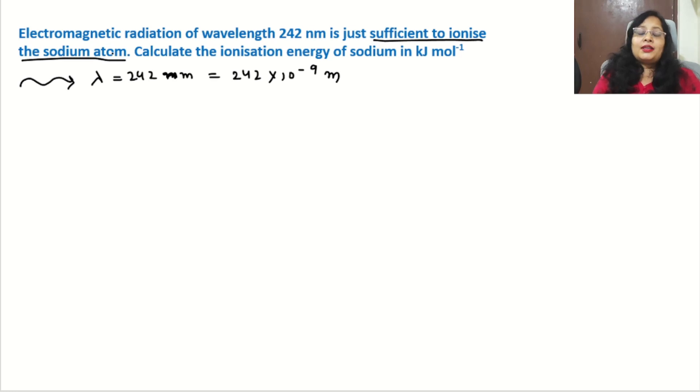It means the ionization energy of sodium is equal to the energy of this given photon. So if we calculate the energy of this photon, we will be able to calculate the ionization energy. We have a formula for energy: E equals h nu, but one more formula is h c by lambda, which we will use because here the value of lambda is given.